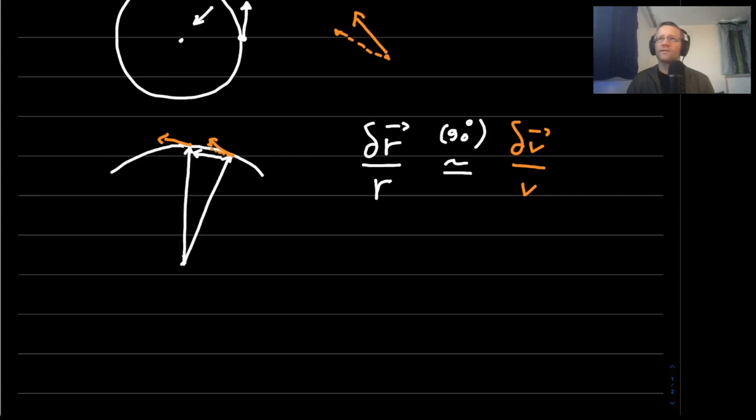So then if we derive this with respect to time, we'll get this. The position vector changes with time, but the radius doesn't.